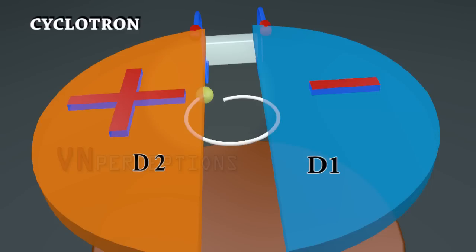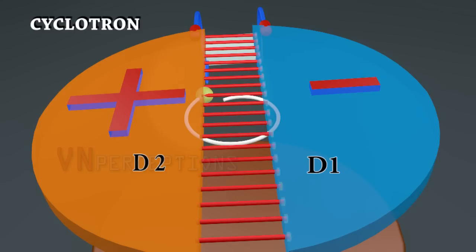Now D2 becomes positive and D1 becomes negative. When it comes out of D it again comes under the influence of electric field. The electric field accelerates the charged particle. The particle would now move from D2 to D1 because its velocity would increase to V2.